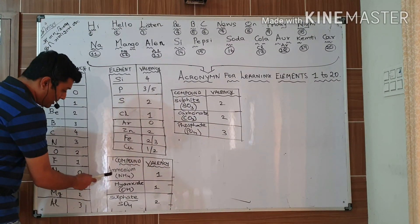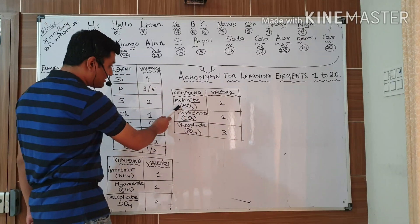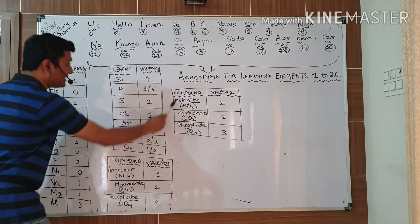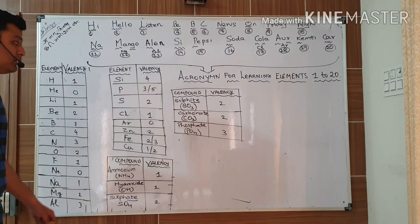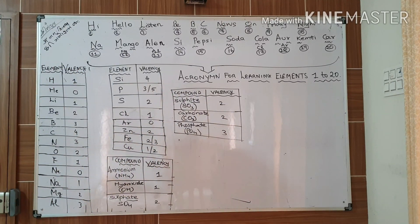These all elements are very much familiar to you and you have used it once or many times. But you have not seen compounds. So let us concentrate on compounds: ammonia, hydroxide, sulfate, sulfite - see the difference between sulfate and sulfite, only 3 letters are changed - carbonate, phosphate, and their respective valency.